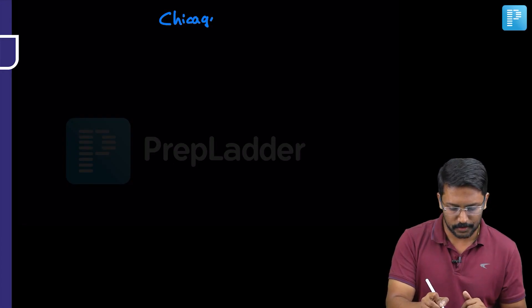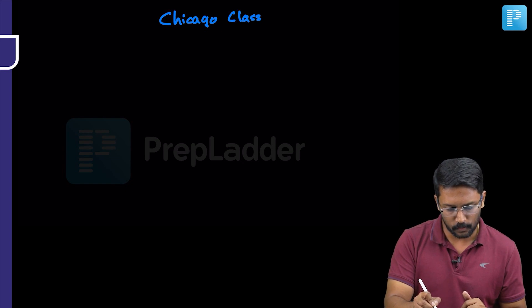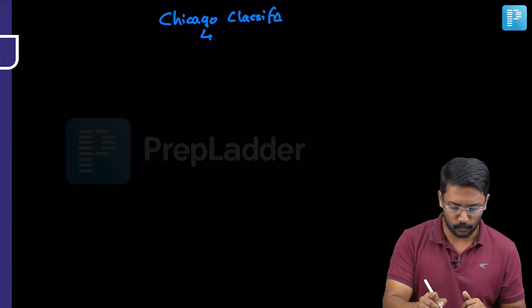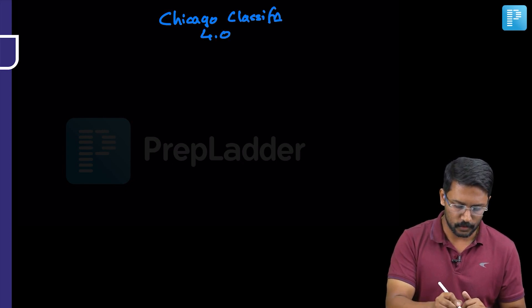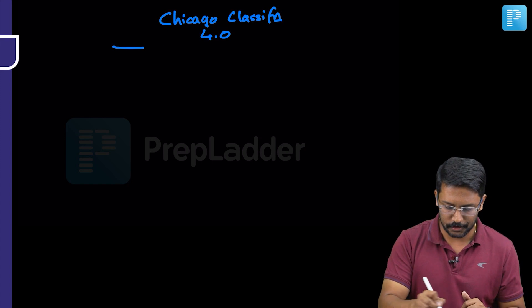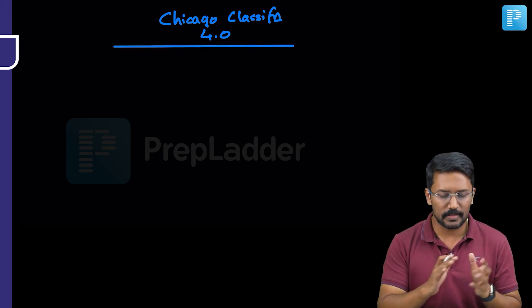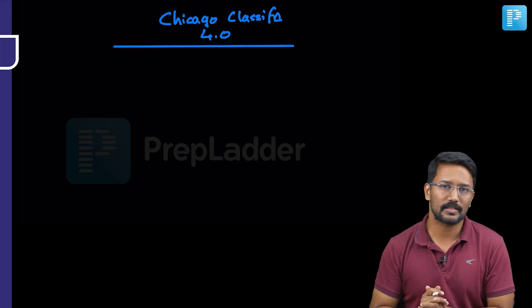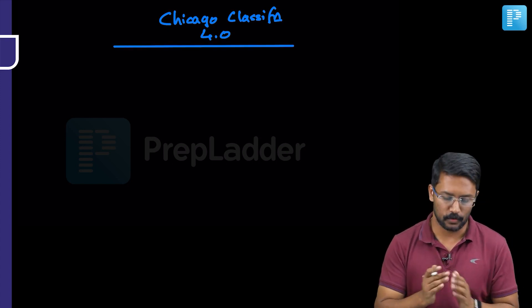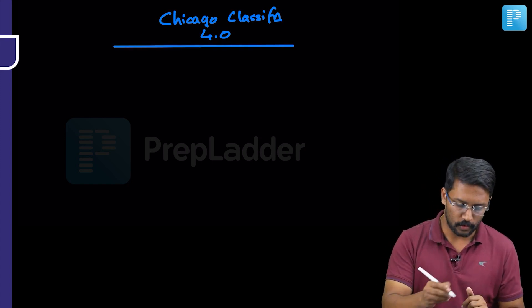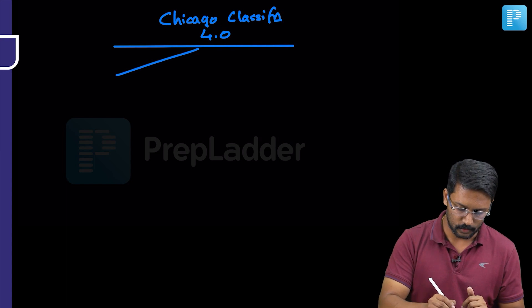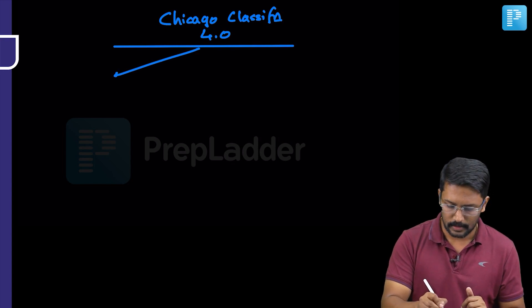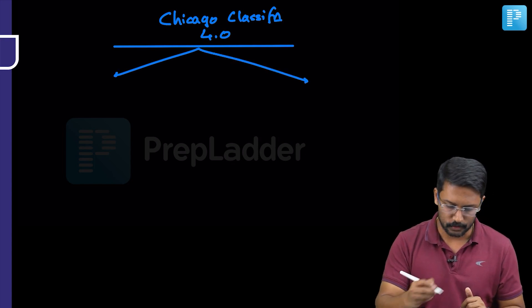Chicago Classification version 4.0. In this classification, esophageal motility disorders are classified into two broad groups: group number one and group number two.